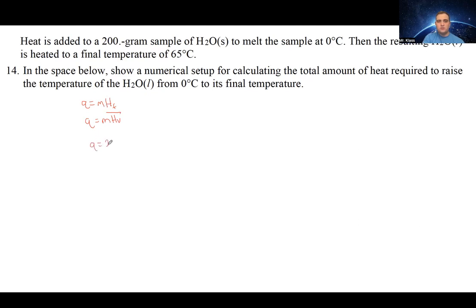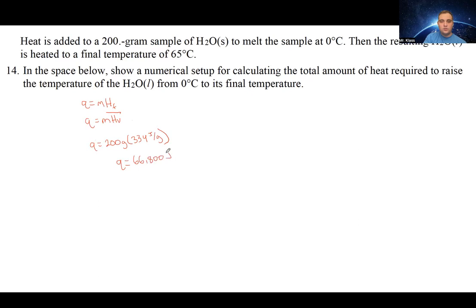Q = mHf: Q equals 200 grams times 334 joules per gram. Using a calculator, 200 times 334 gives Q = 66,800 joules. For convenience, let's convert this to kilojoules: 66.8 kilojoules. Now we know the heat of the phase change.